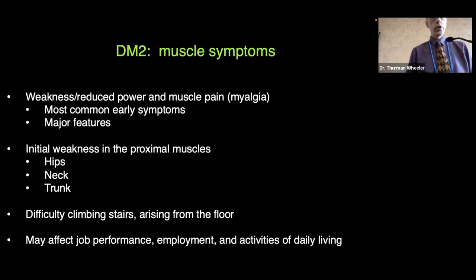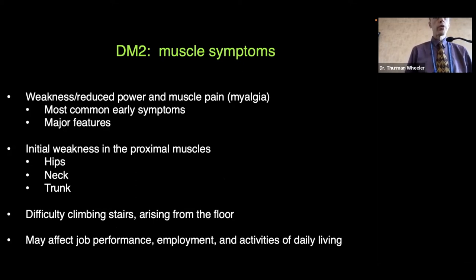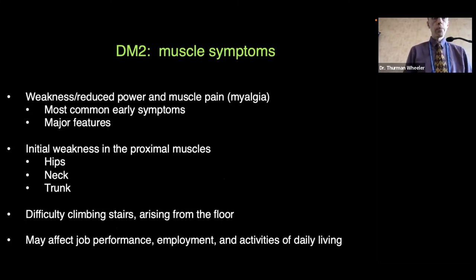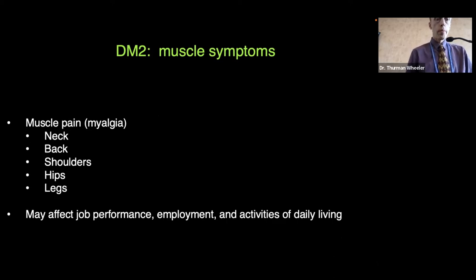Muscle symptoms in DM2 include weakness or reduced muscle power, along with muscle pain — the most common early symptoms and major features. The initial weakness is in the proximal muscles: the hips, the neck, and the trunk. This can result in difficulty climbing stairs, arising from a floor, and may affect job performance, employment, and activities of daily living. Muscle pain, also known as myalgia, can affect the neck, back, shoulders, hips, and legs, and may also independently affect job performance and activities of daily living.